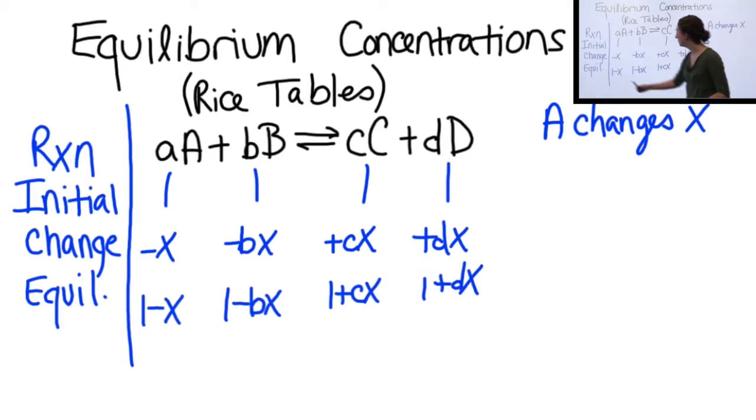So now we know the concentrations of all the different reactants and products. The only problem is that we only know them in terms of X. We don't actually know how much the concentration for each species is changing. So what we do is we go over here and we write our equilibrium constant.